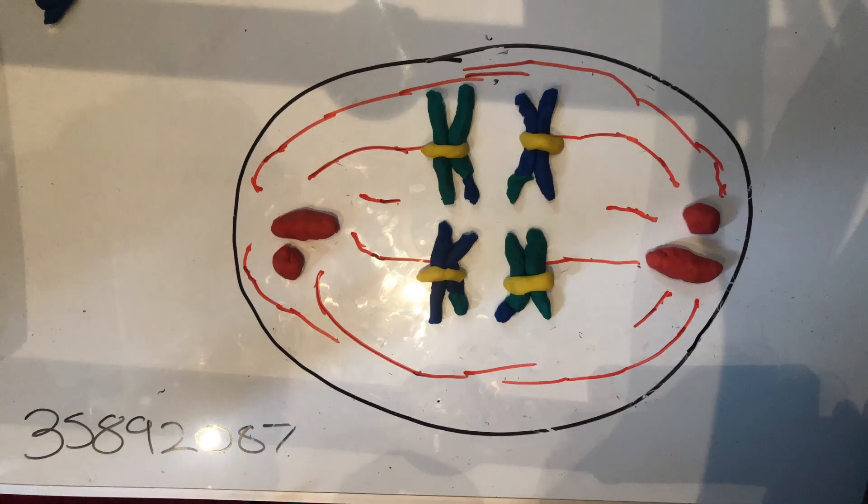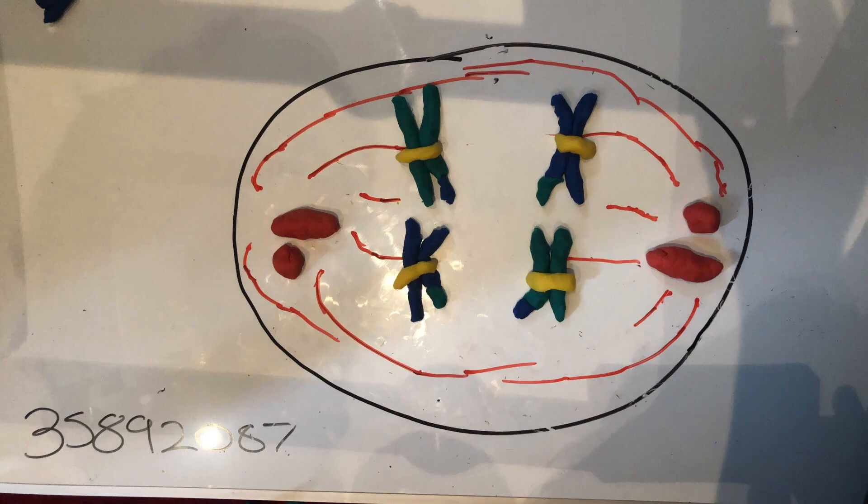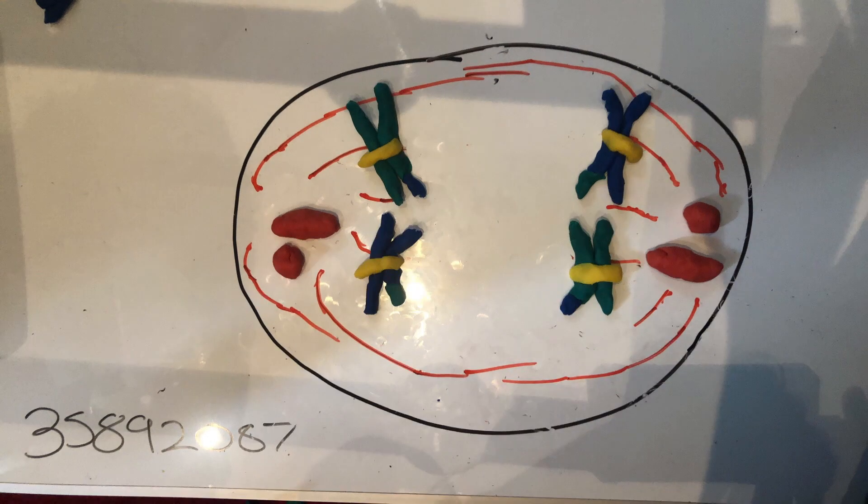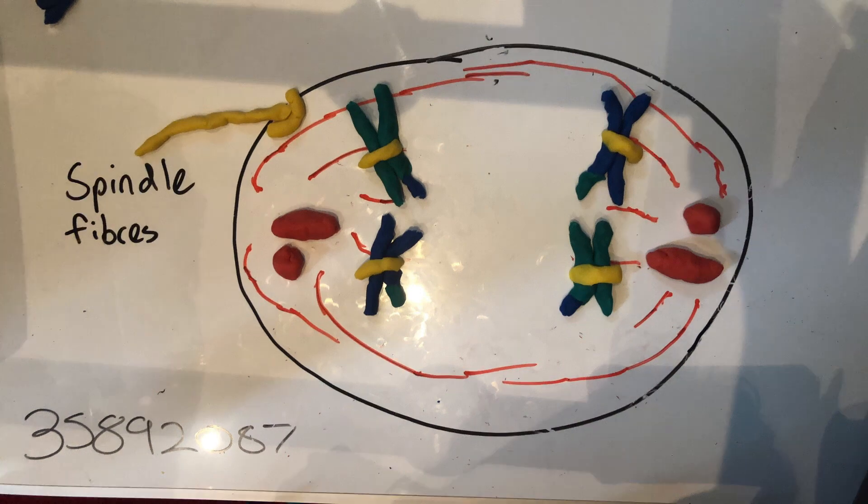Once the homologous pairs have been moved to the metaphase plate, anaphase 1 begins. During anaphase 1, the homologous chromosomes are pulled by the spindle fibers towards either pole of the cell. During this process, the chromatids remain attached at the centromeres of their respective homologous chromosomes.